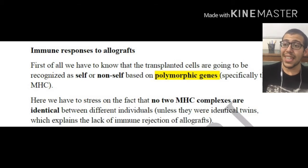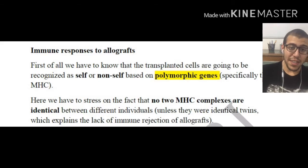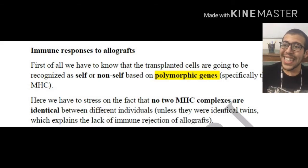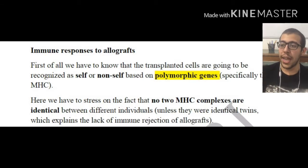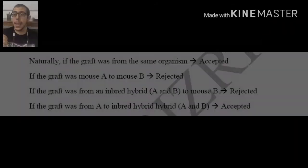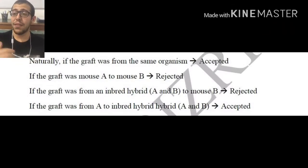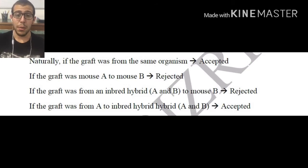We have to stress that no two MHC complexes, or HLA, are identical between different individuals unless they are identical twins — which explains the lack of immune rejection of allografts in that case. Naturally, if the graft is from the same organism, it is going to be accepted since the MHCs are all going to be the same.